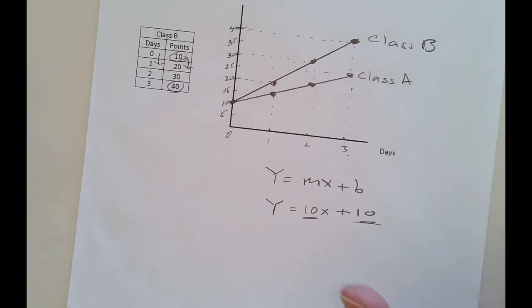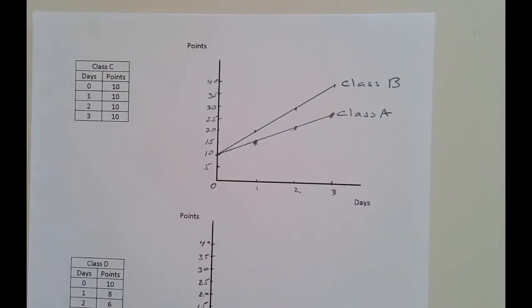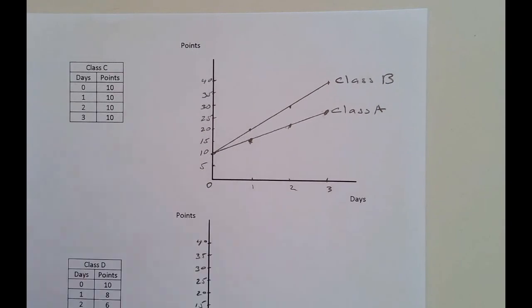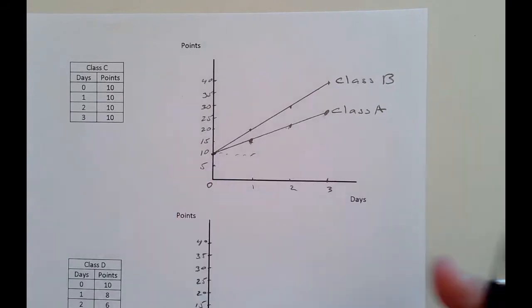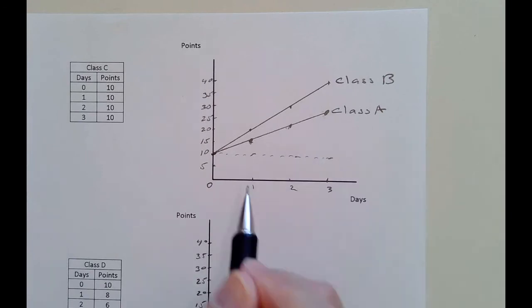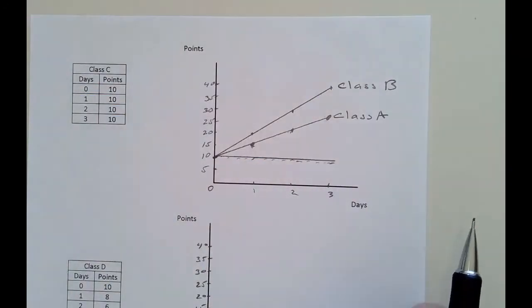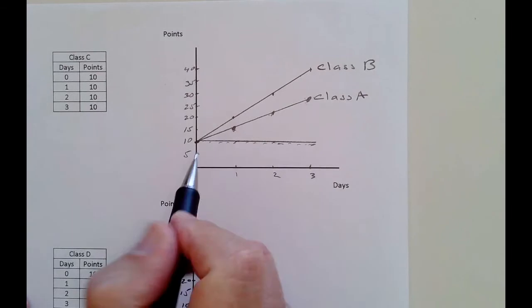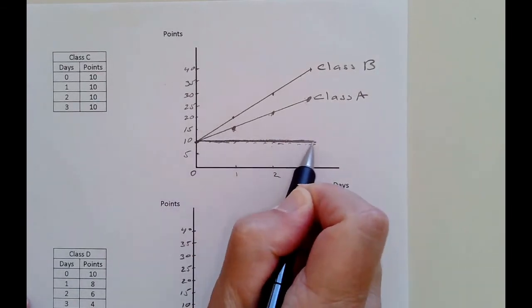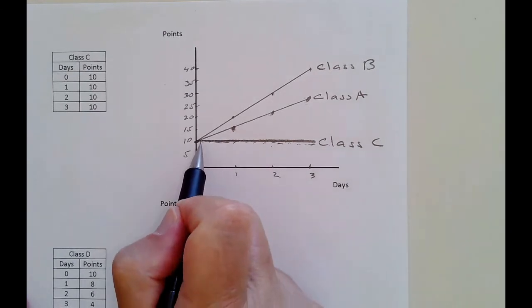Here I've sketched in class A and B, and now we have class C, which is kind of strange. It has 10 again as a starting point, but if you come to class one time, you still get 10 points. Two times, still 10 points. Three times, still 10 points. Getting my ruler out — it is a flat line. The slope here is zero. Every time you come to class, you get no more points; there's no increase going up or down.